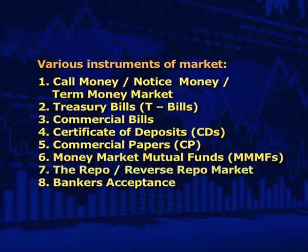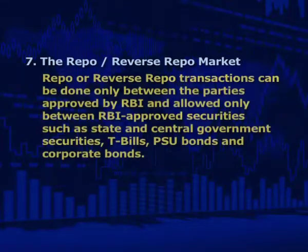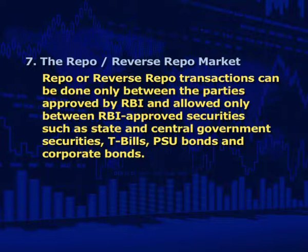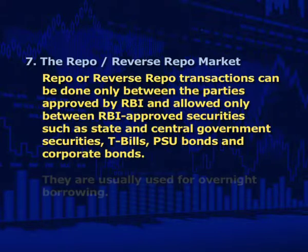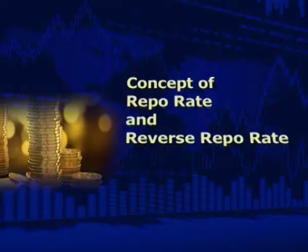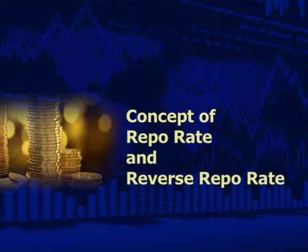Seventh is the repo or reverse repo market. Repurchase agreements, also called repo or reverse repo, are short-term loans that buyers and sellers agree upon for selling and repurchasing. Repo or reverse repo transactions can be done only between parties approved by RBI, and are allowed only between RBI-approved securities such as state and central government securities, T-bills, PSU bonds, and corporate bonds. They are usually used for overnight borrowing. The seller sells securities with the promise of repurchasing them at a given price on a given future date, while the buyer purchases the securities with the promise of selling them back to the seller.